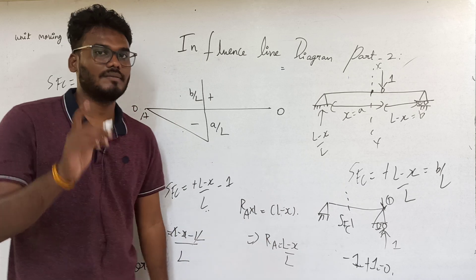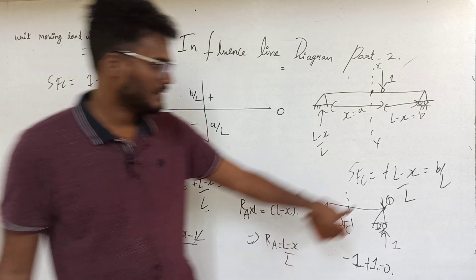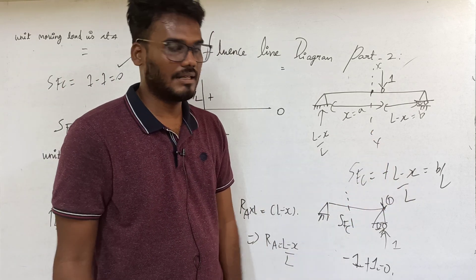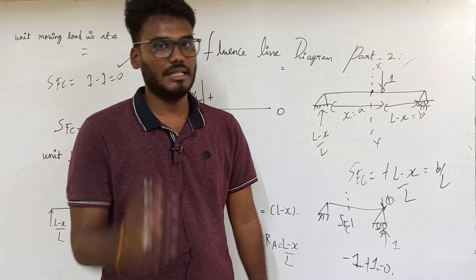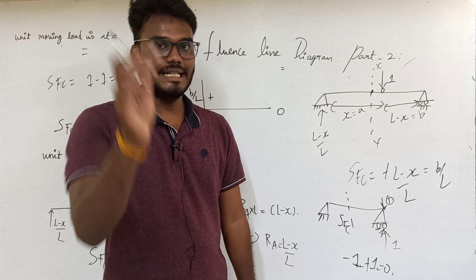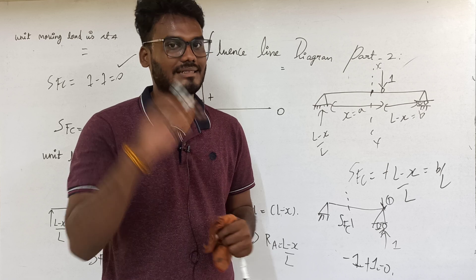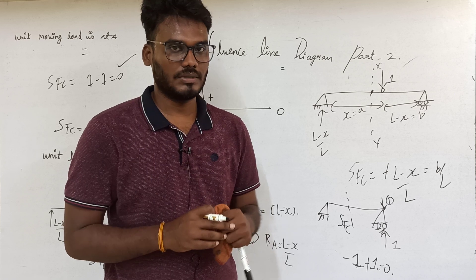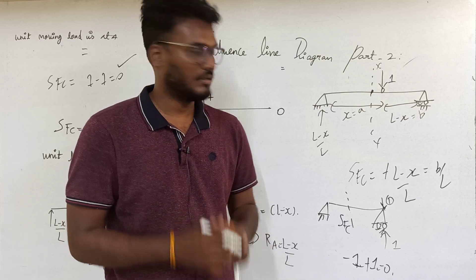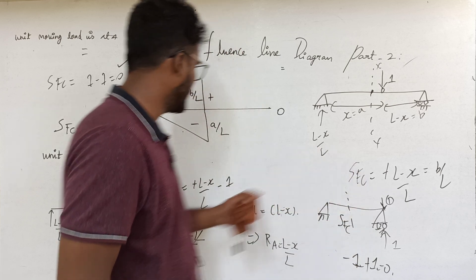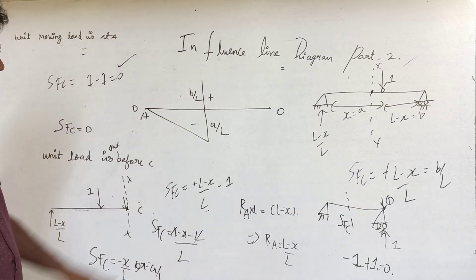The equation x by L or (L minus x) by L is a linear equation in one variable. Mathematically, a linear equation in one variable is graphically a straight line. So if you join the points, the variation will be linear.